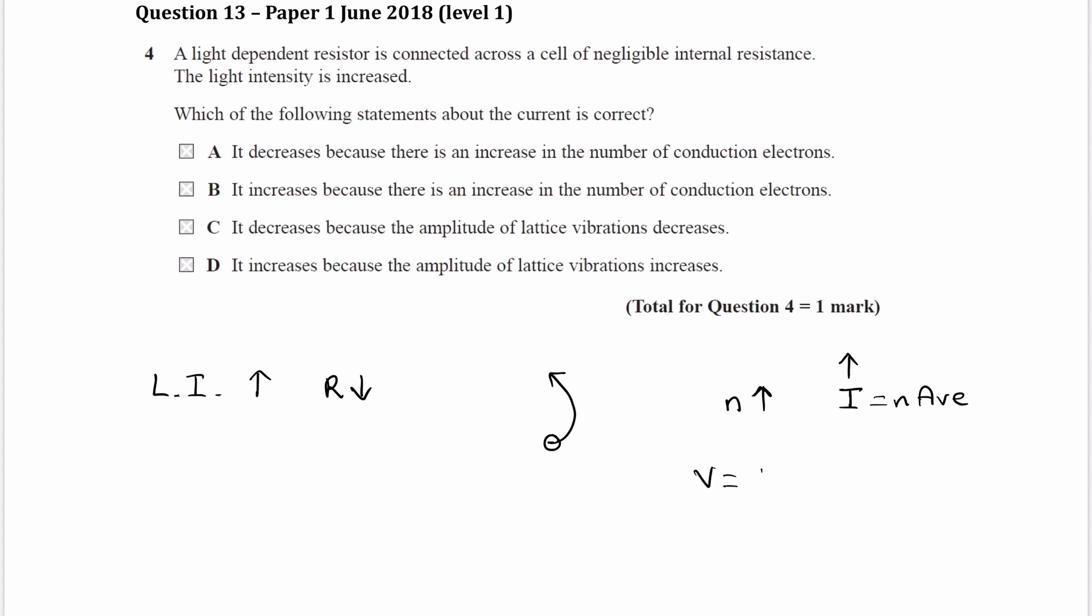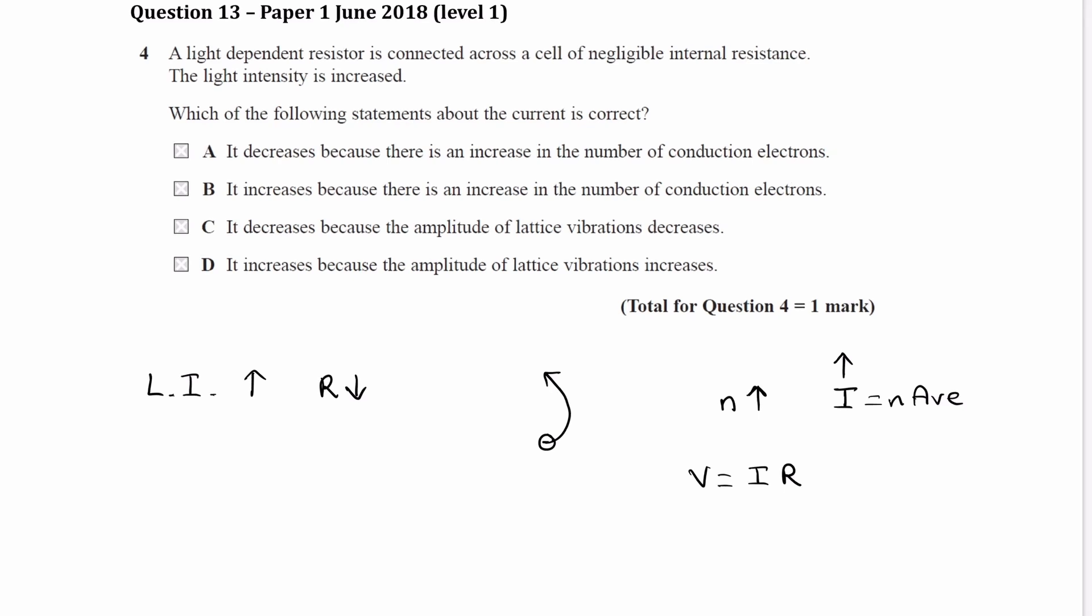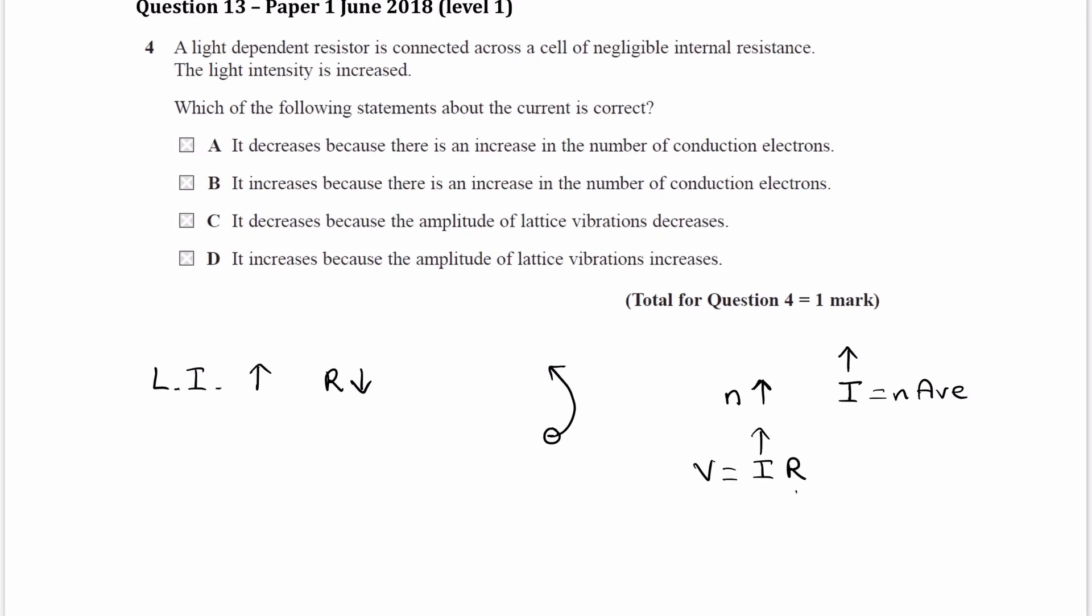If we think about the equation V equals IR, if the current increases for a given voltage—let's say we're keeping voltage constant across our light-dependent resistor—and the current increases, that causes the resistance to decrease, which is why we have this.